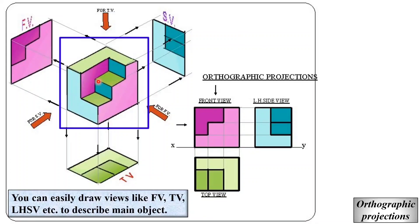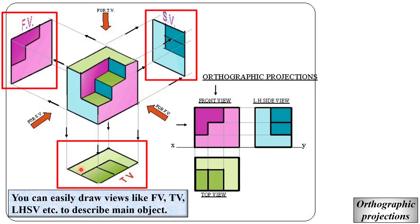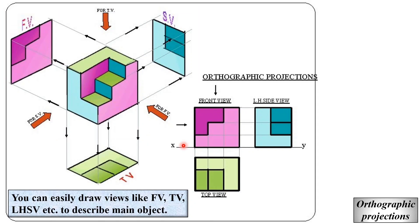Here you can see this is the real 3D object and these are the different 2D views to represent the 3D object. These are the 3 views drawn separately, and from these 3 views you can imagine the real 3D object. This picture of the object is the 3D representation and these are the 2D views.